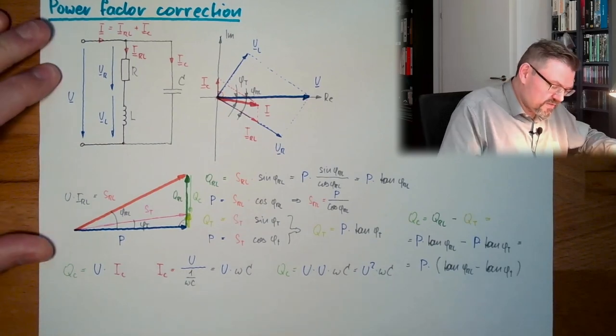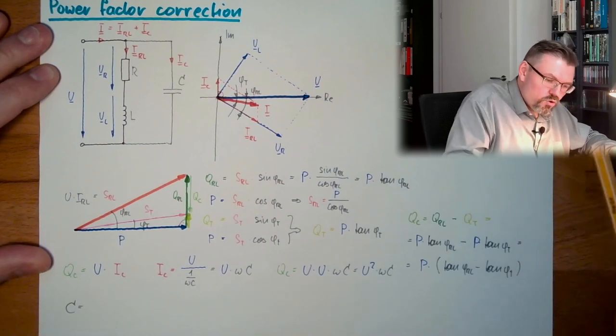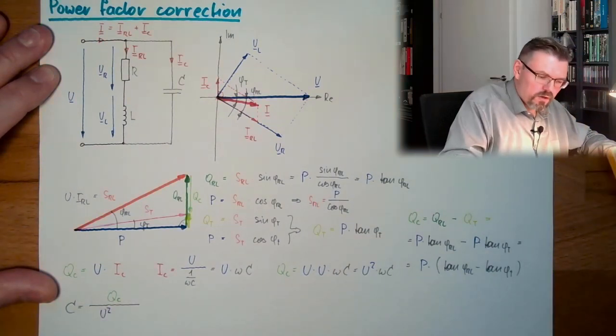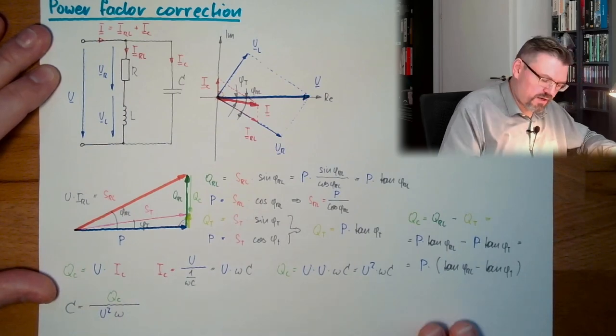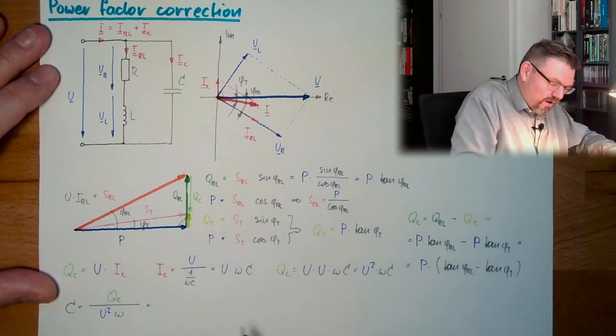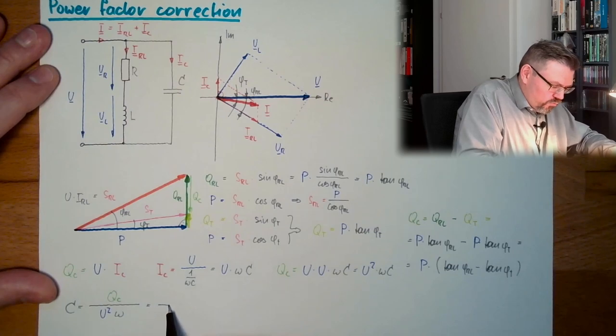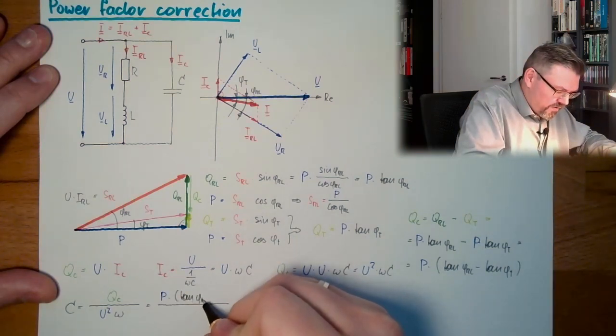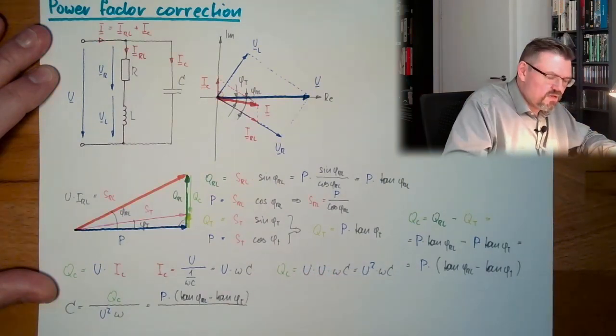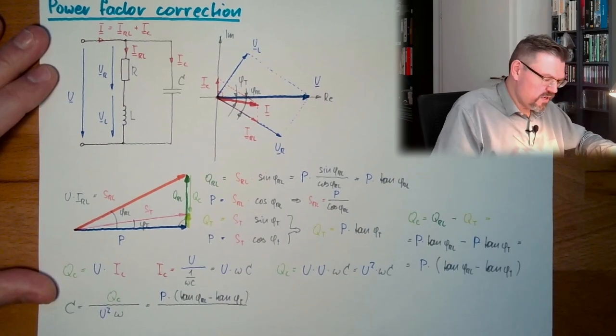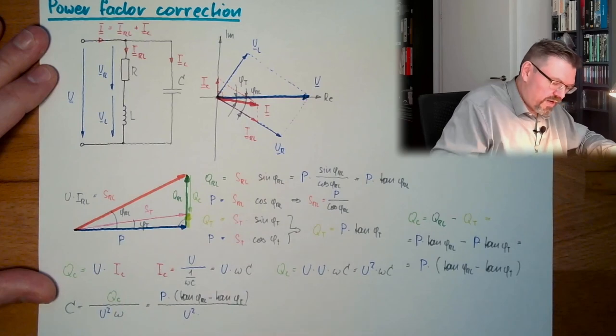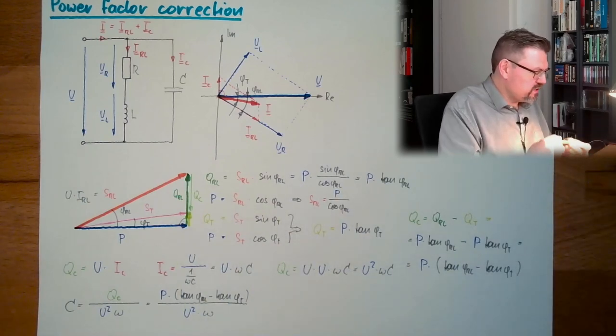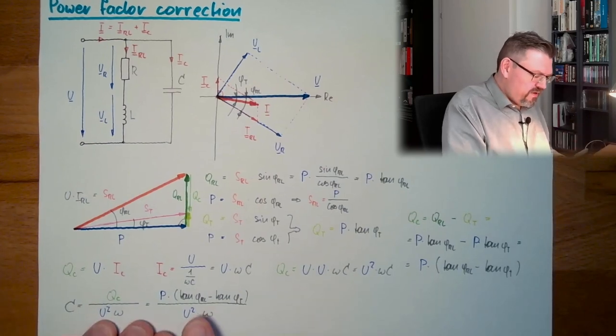So let's calculate C out of this. So here I take this formula, my C equals Q_C divided by U squared omega. Now I take this one. So we have here, now I need a big fraction line. P multiplied by tangent phi_RL minus tangent phi_t, divided by U squared multiplied by omega. This is the value of C I would need to add in this combination, that I can compensate my power factor from this phi to this phi.